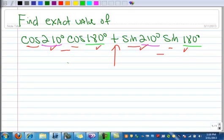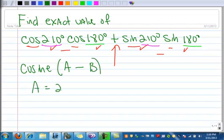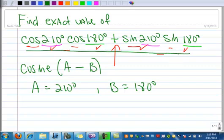I look at this and then I look at my identities, and I say, oh, this looks like the cosine of A minus B, because the 210 is my A and the B is 180. So I can just take this whole big thing and rewrite that as the cosine of 210 minus 180.